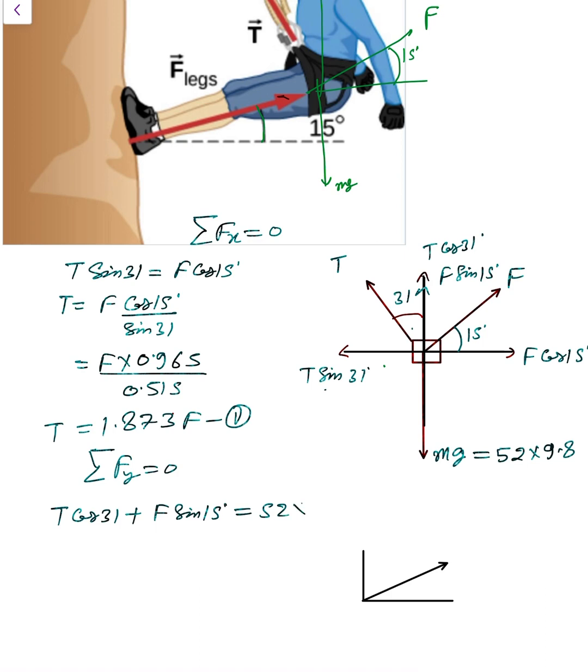So you can say that T cos 31 plus F sin 15 equals mg, which is 52 times 9.8. So T, which is 1.873F, times cos 31 plus F sin 15 equals 52 times 9.8. So F in brackets: cos 31 is 0.857 times 1.873 plus sin 15, which is 0.258.